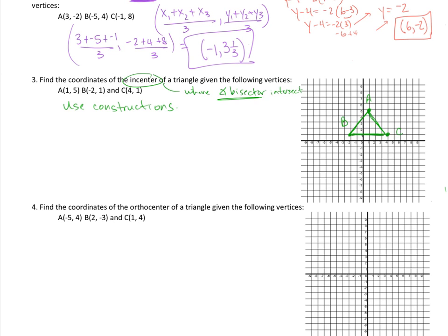Since we're looking at angle bisectors, I need to know the angle at each vertex and bisect it — cut it in half. At this point in geometry, we haven't learned how to find these angles without a protractor, as it would involve sine, cosine, and tangent. So instead, we're going to use constructions. Using a compass, mark tick marks through each angle and construct the bisectors.